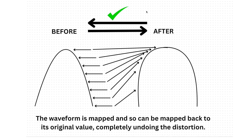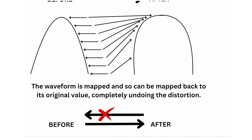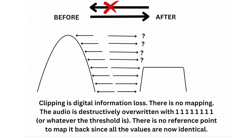Not only is there no data loss, but the fidelity of the original signal is still there — it's just compressed. You've got all of the details of the waveform still in the waveform. But now let's look at digital clipping. With digital clipping, there's no remapping of the values. The values above the threshold are simply lost. And because all of those values are now identical, you can't map back — you don't know what was what.